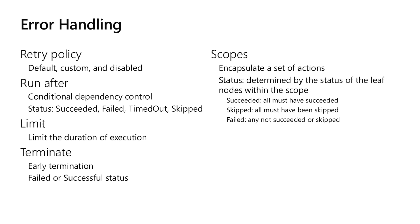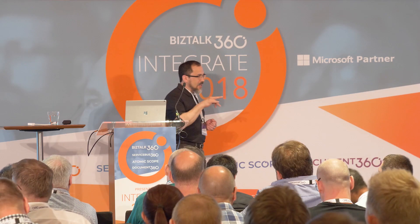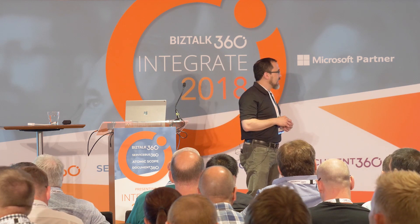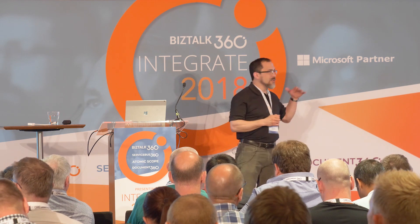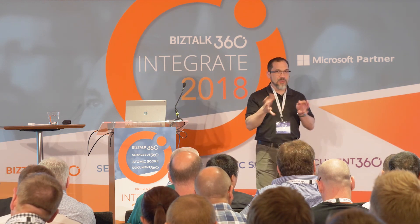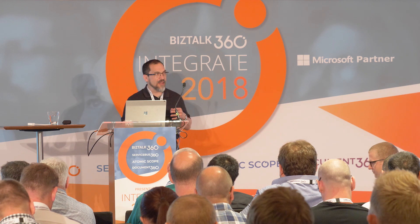Logic Apps has a graph of connectors and actions, defined by the run-after property. It says this action will run after step A or B. Within that run-after, you can take advantage of conditional dependency control — for example, having an action run after step A only if it fails. By default we say run after A if it succeeded, but you can manipulate those run-afters to create an error handling experience, such as running after failure, timeout, or if a step was skipped.